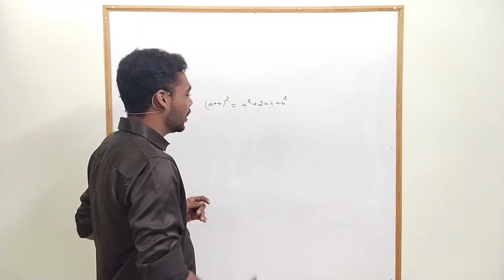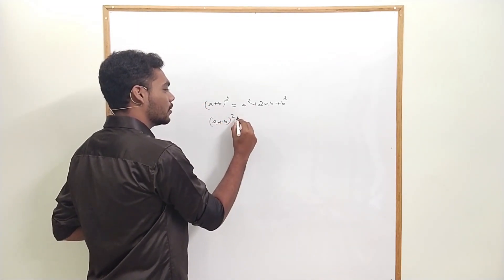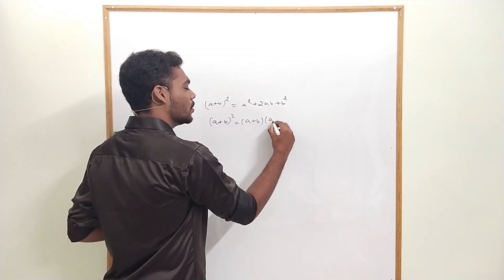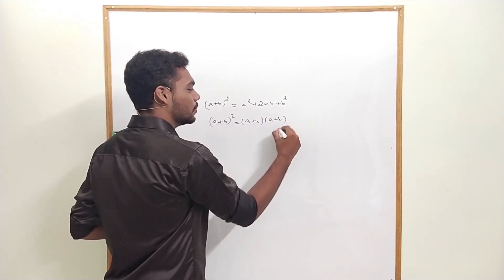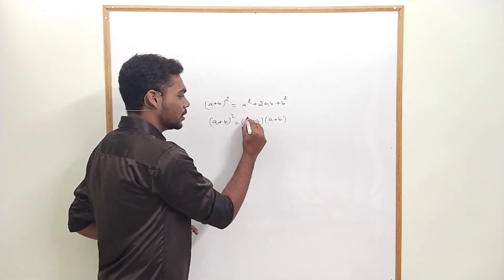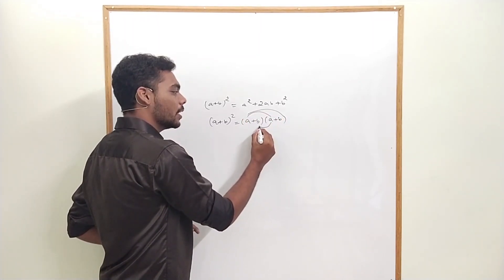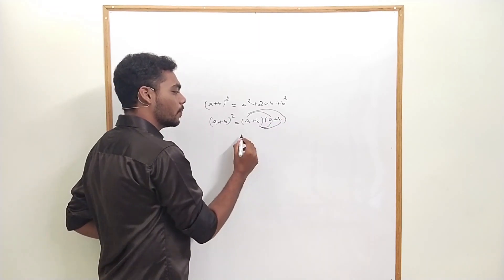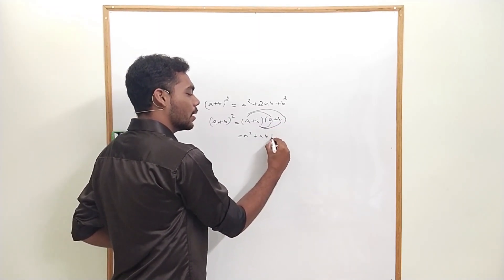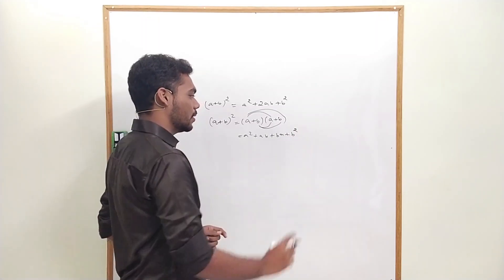If we learn the formula in childhood: A plus B the whole square equals A plus B into A plus B. If we multiply: A into A, A into B, B into A, B into B — we get A square plus AB plus BA plus B square.